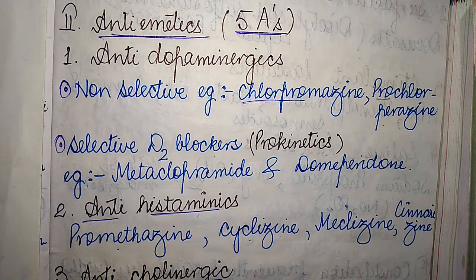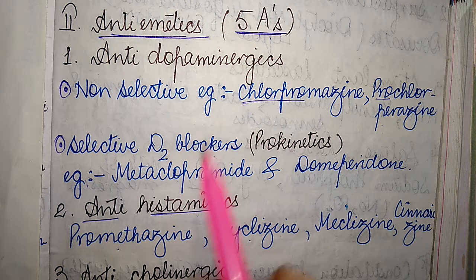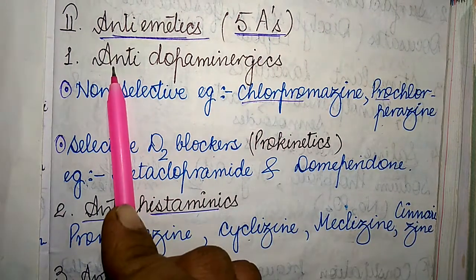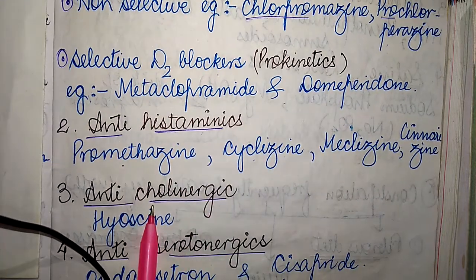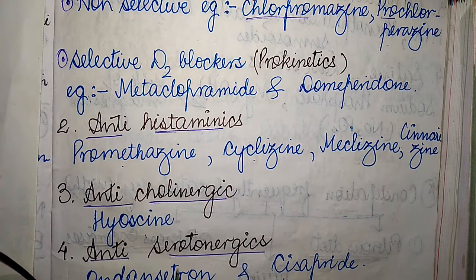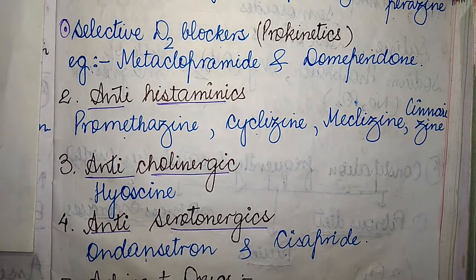The first A refers to anti-dopaminergics, the second A to anti-histaminics, the third A to anti-cholinergics, the fourth A to anti-serotonergics, and the fifth A to adjuvant drugs. If you liked this video, please subscribe to my channel and press the bell icon for updates.